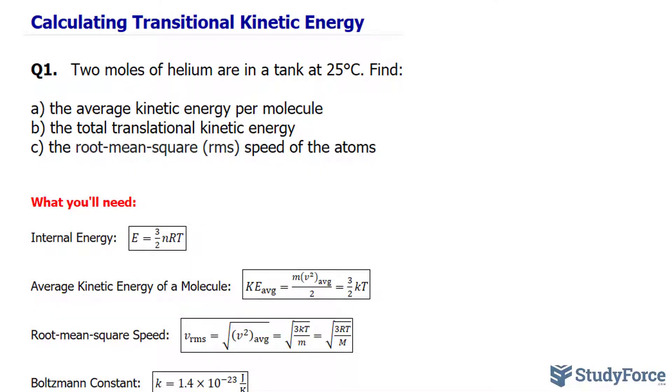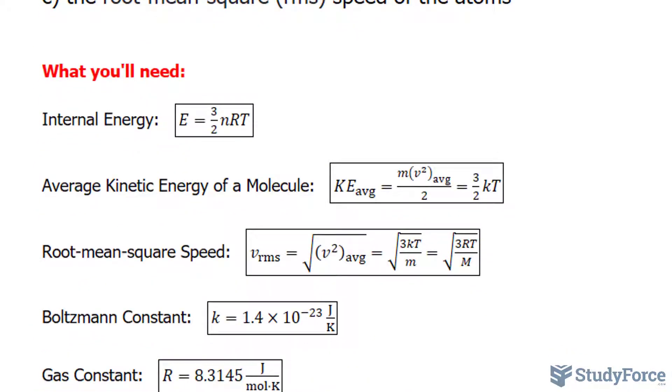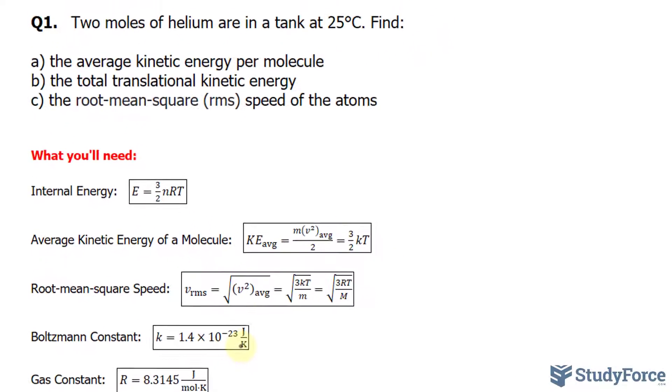To find the average kinetic energy, I have these formulas prepared for you. The average kinetic energy of a molecule can be found by taking 3 over 2 multiplied to K, which is the Boltzmann constant, and that's provided underneath, times the temperature represented by capital T. So let's go ahead and do that.